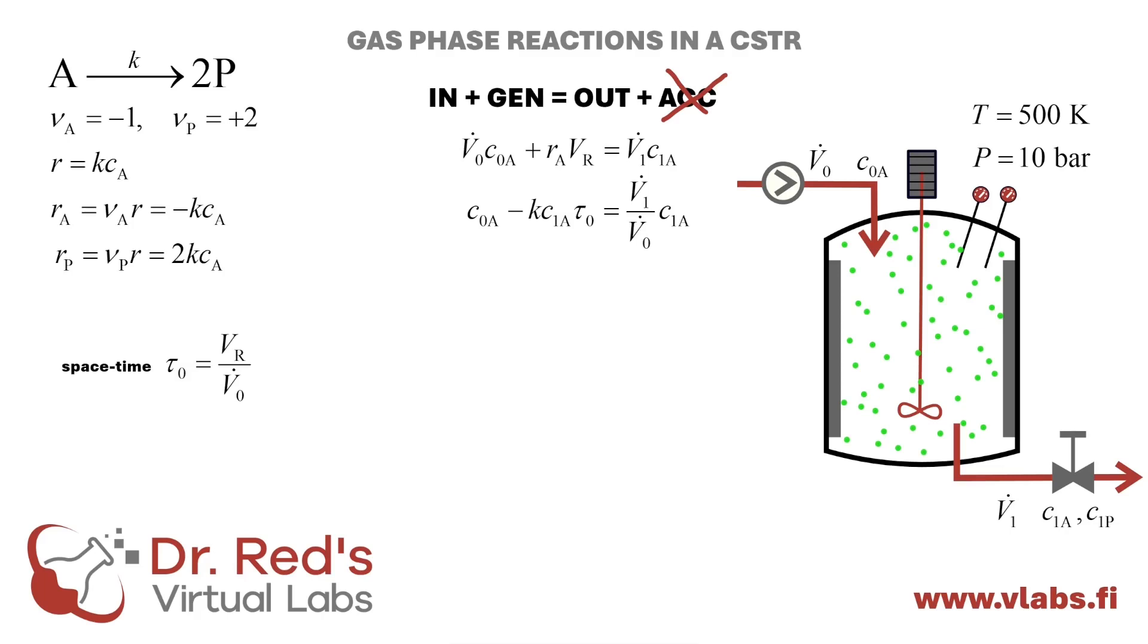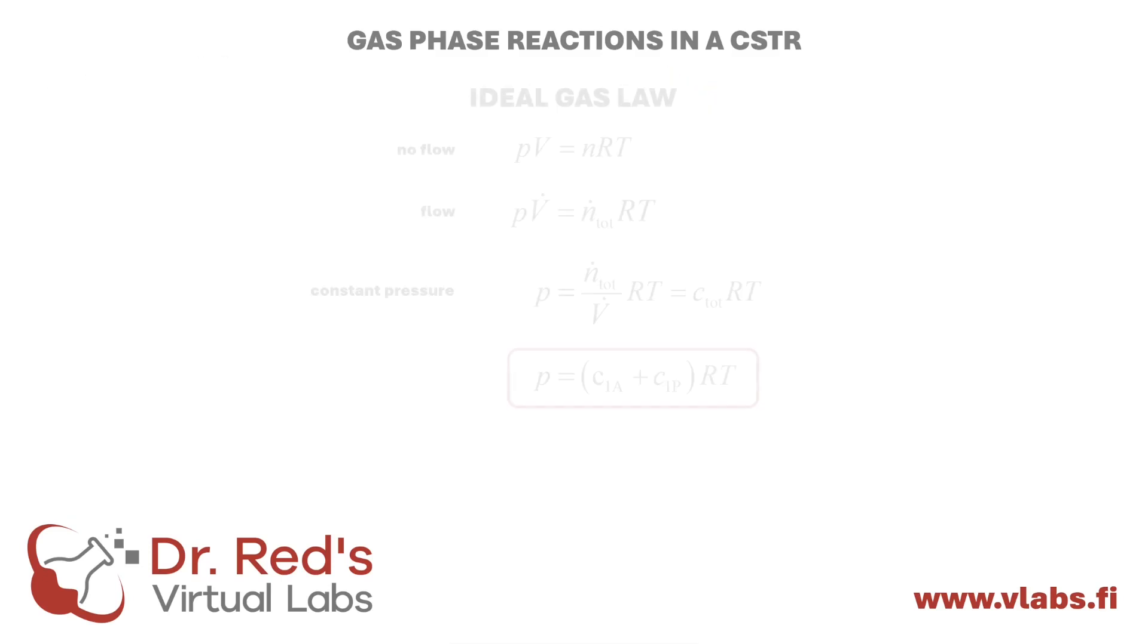Let's introduce the mass balance for the product. Looks nice, but now we have two equations for three unknowns. To solve this, we note that the gas phase CSTR operates at constant temperature and pressure, here, 500 Kelvin and 10 bar. The ideal gas law applies under flow conditions as well. It relates the pressure to the total concentration, giving us the third equation needed.